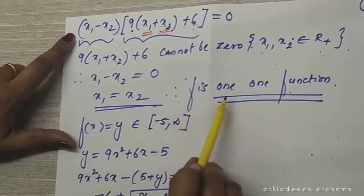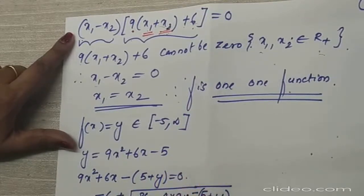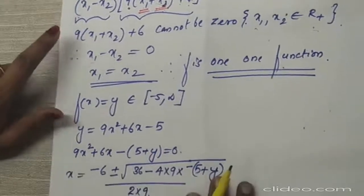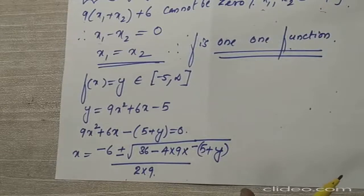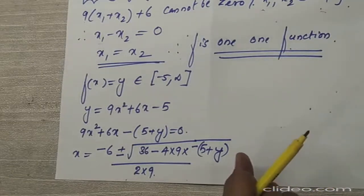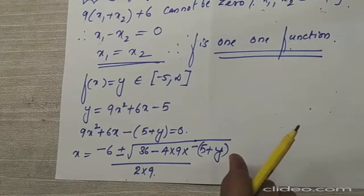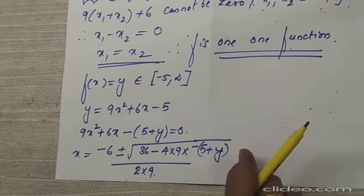This means the function f is one-one. Now we need to show f is onto. For showing onto, we change the dependency — we write f(x) = y, find the value of x in terms of y, then substitute back into f(x) and show it equals y.